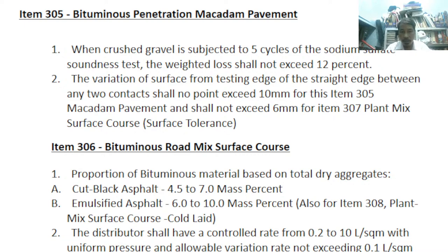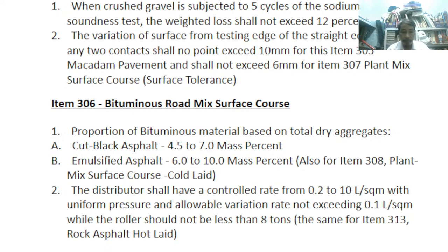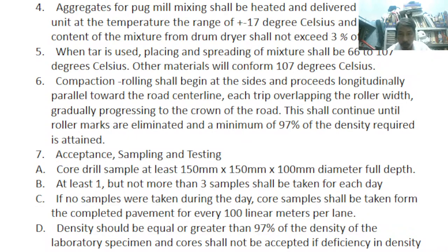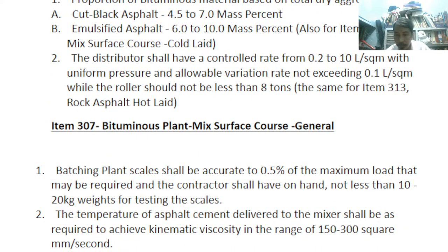Item 306 covers the proportion of bituminous material based on total dry aggregates. Option A is cutback asphalt and Option B is emulsified asphalt, with mass percentages of 4.5 to 7 percent and 6 to 10 percent respectively. Distribution shall be at a controlled rate from 0.2 to 10 liters/m² with allowable variation not exceeding 0.2 liters/m², and the roller shall not be less than eight tons.